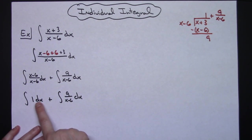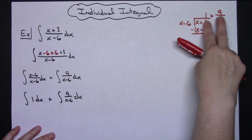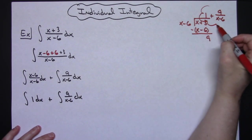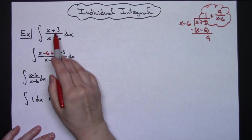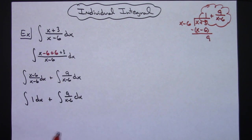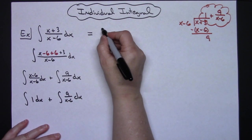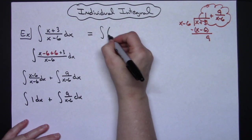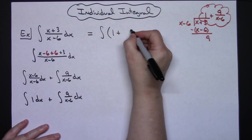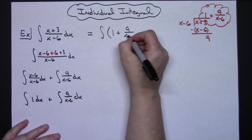Which is exactly what I got here: 1 plus 9/(x-6). So if you do this, you know then that this is equal to this original rational function right there, so you can immediately rewrite this as the integral of, in here, let's just do it the whole thing, 1 plus 9/(x-6) dx.